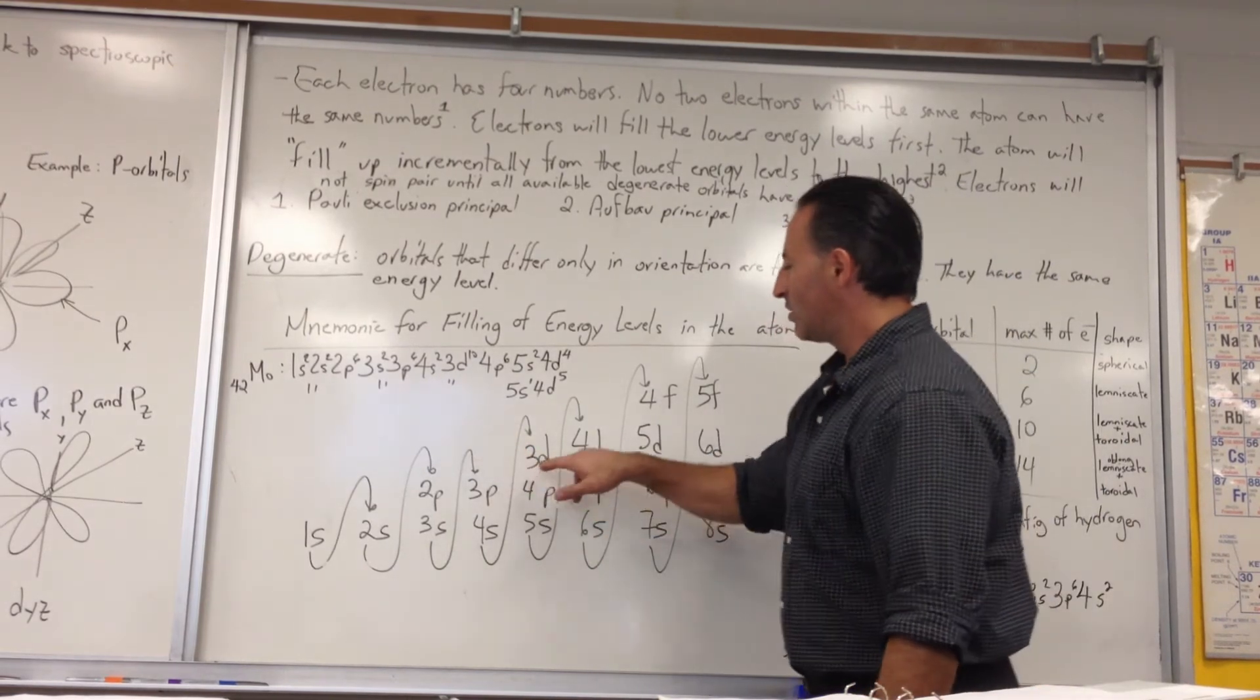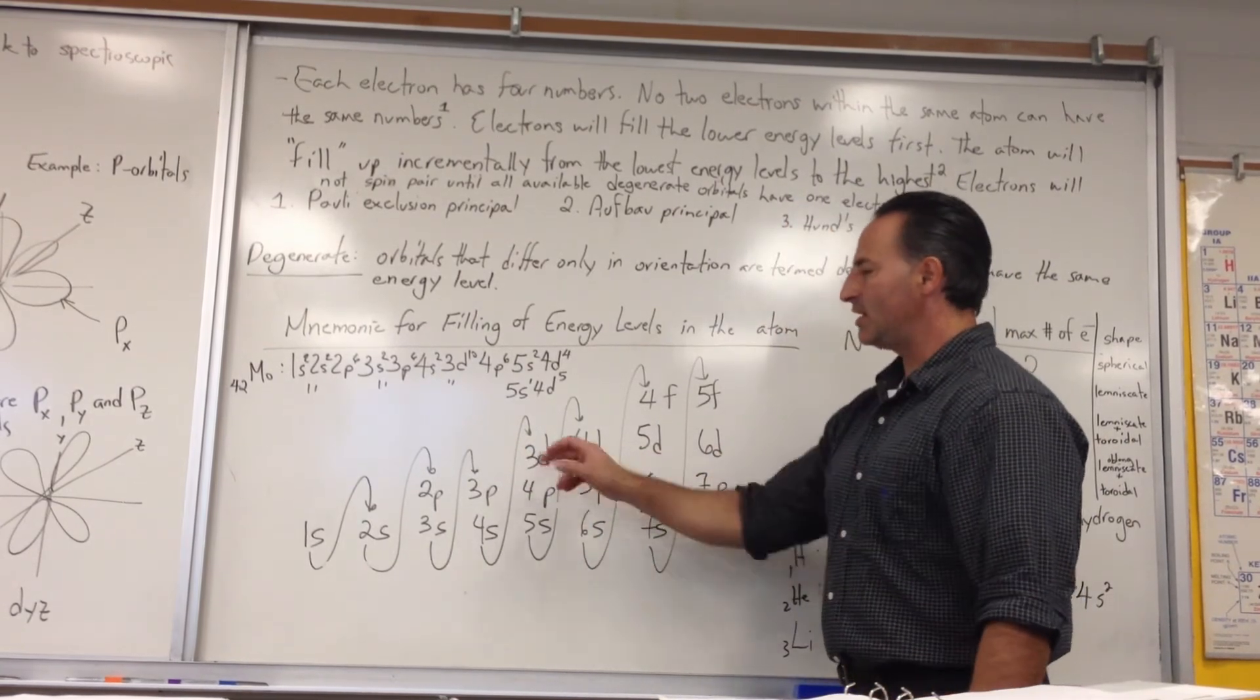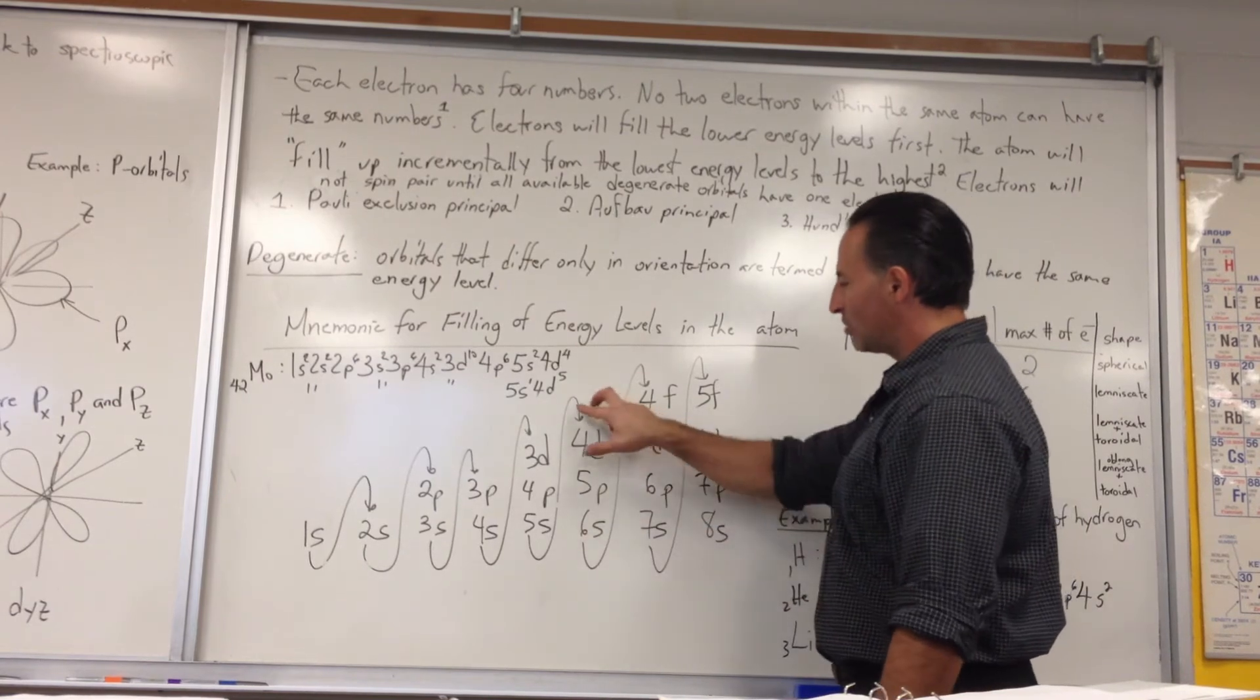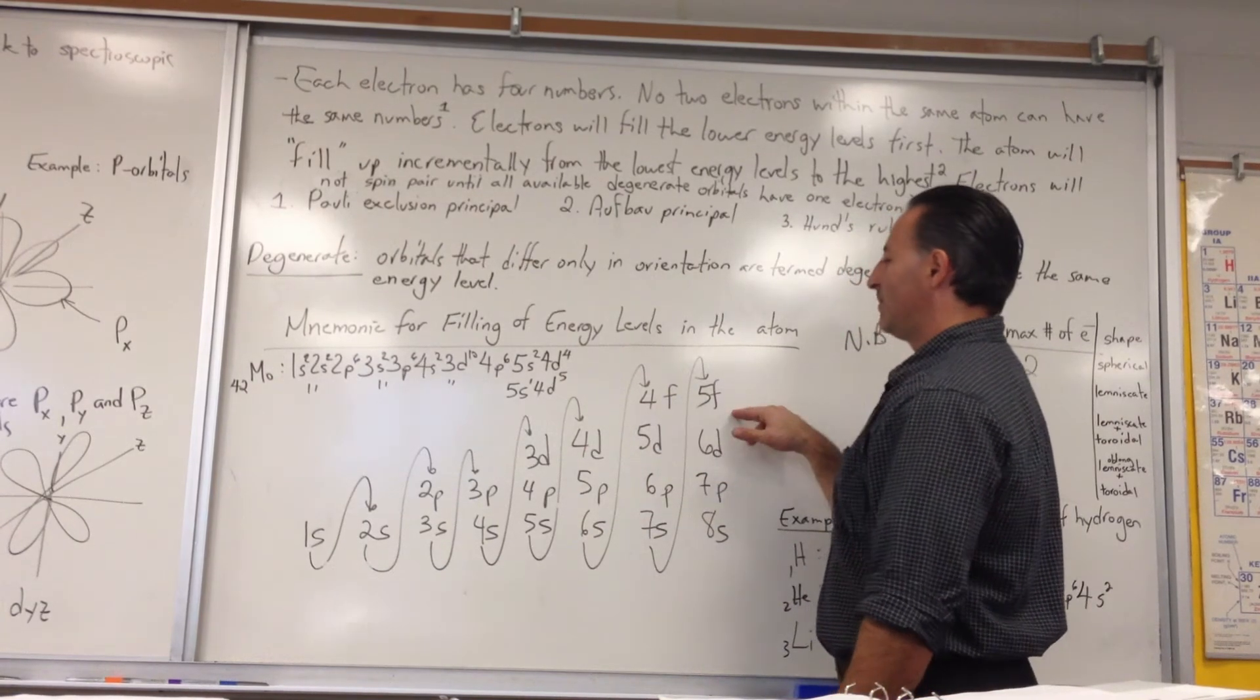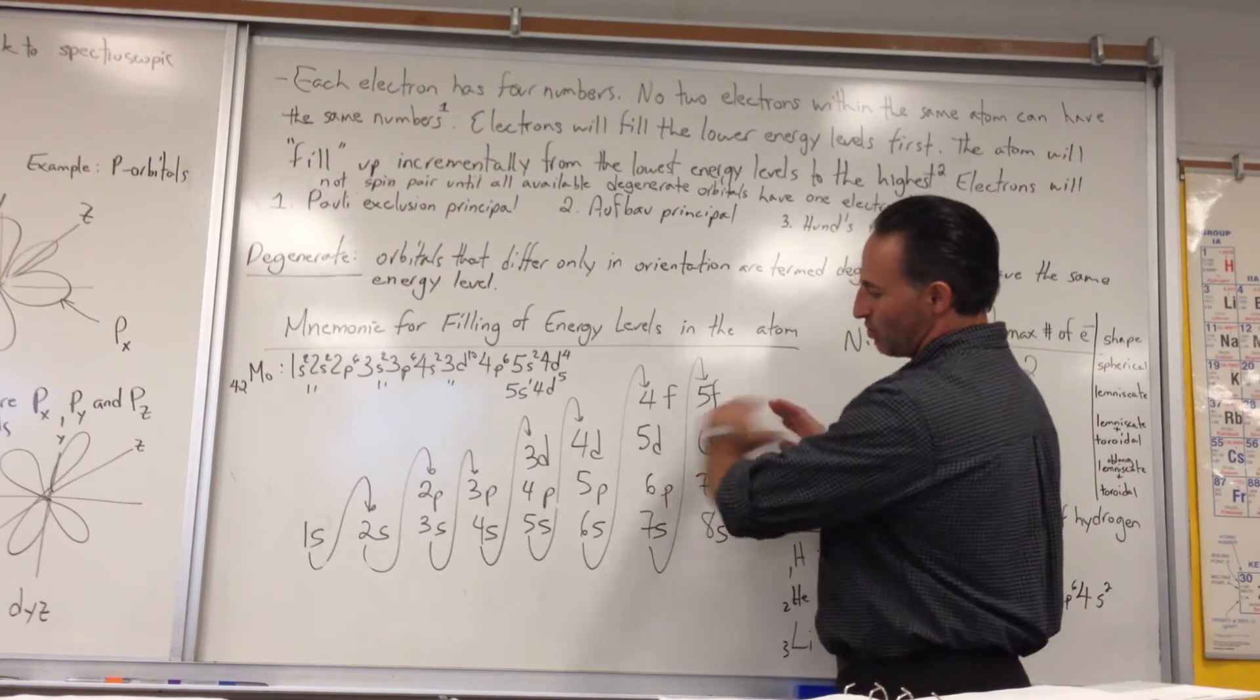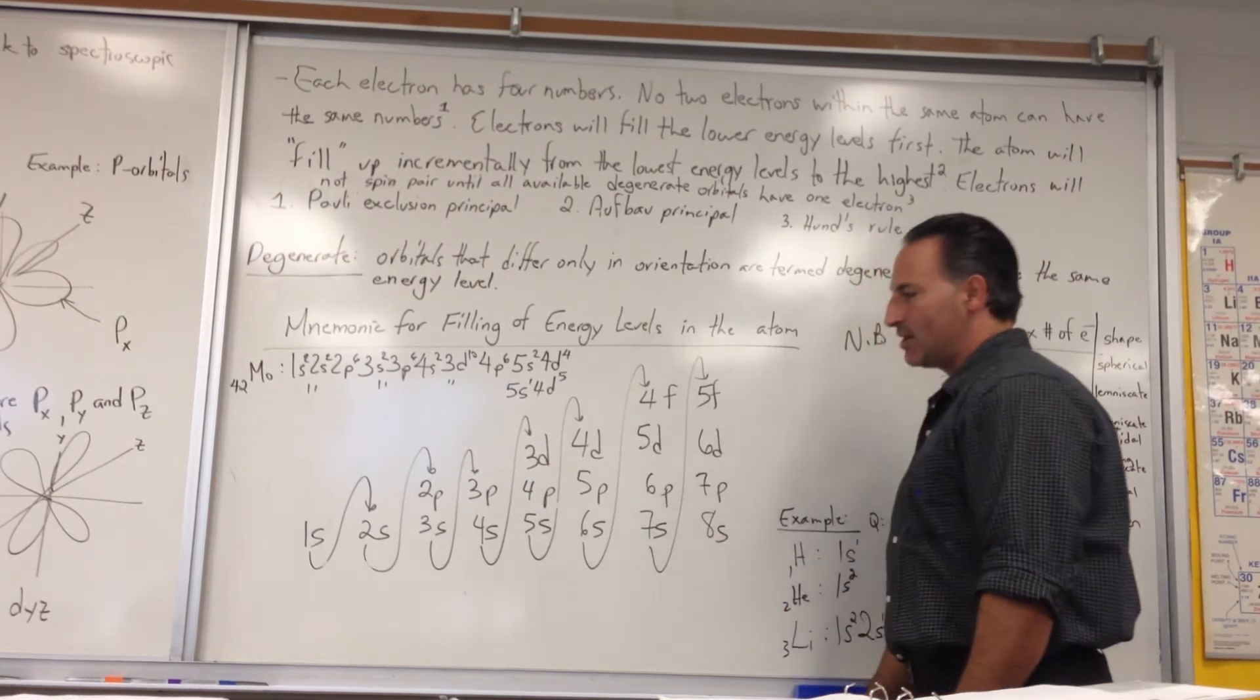Then you skip another two numbers, and you number from three to six, and you put a D next to each number. And you skip again two, and you start at four, and you put an F next to each number. So it makes a nice wedge shape that is easy to remember.